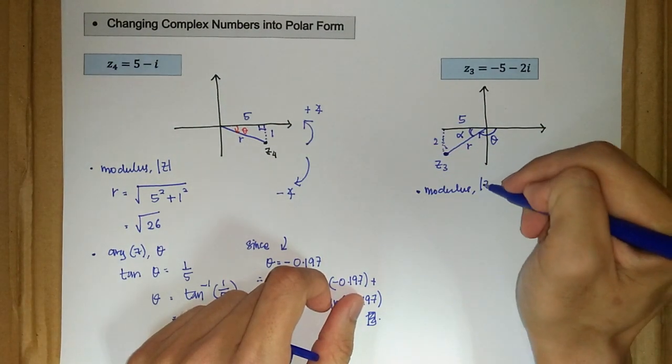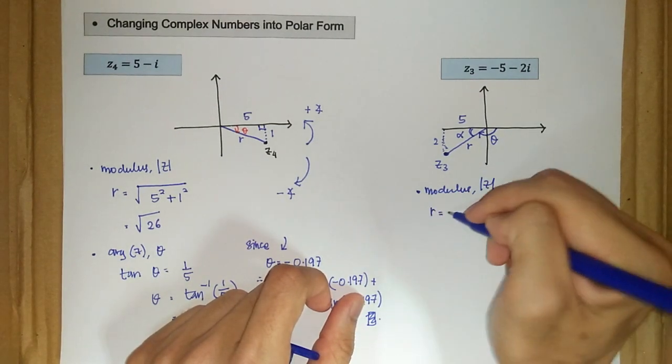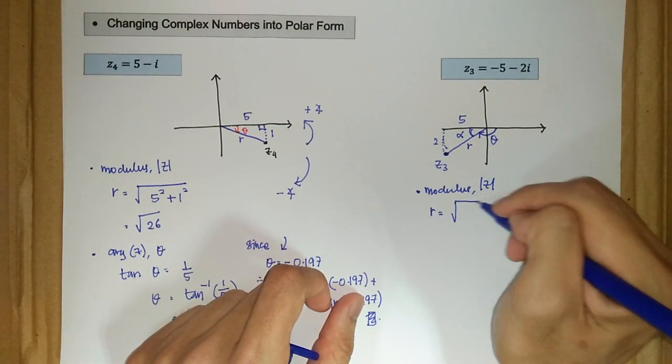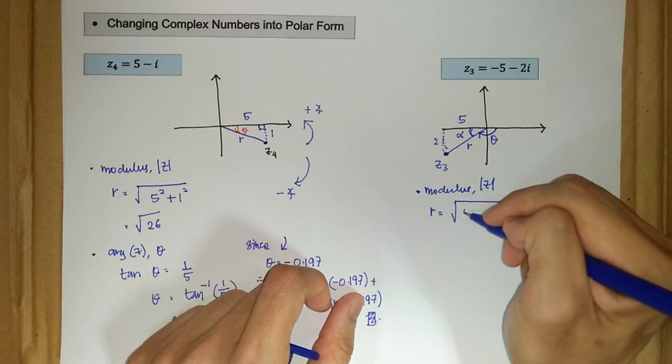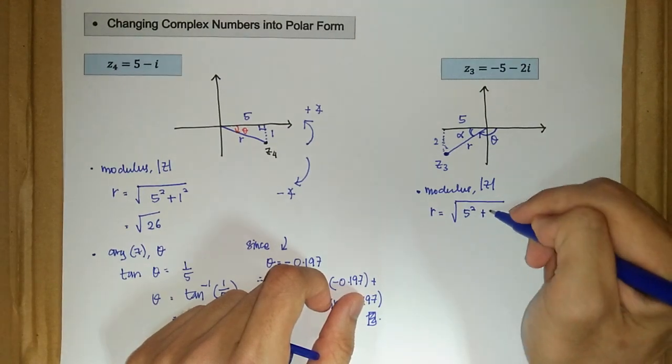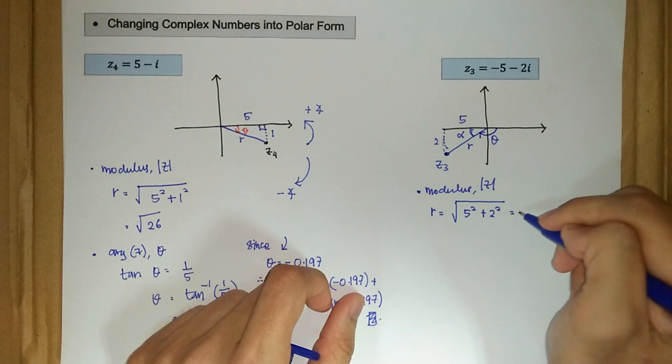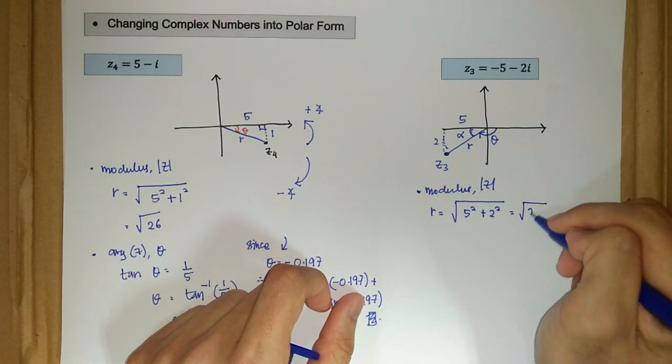So we have modulus z, so r is equal to square root of 5 squared plus 2 squared. Therefore we have square root of 29.